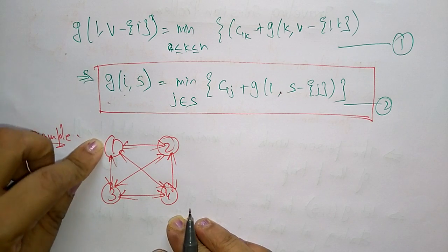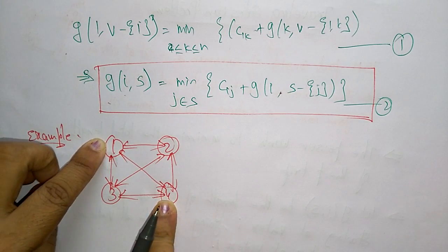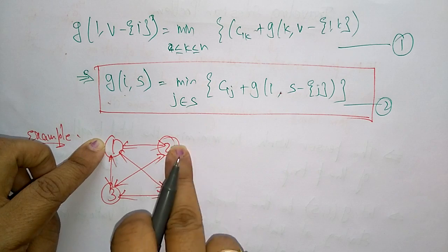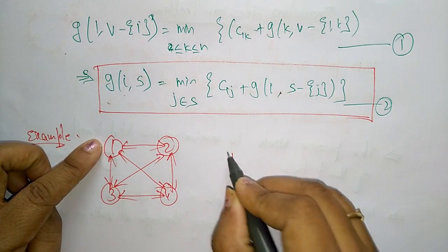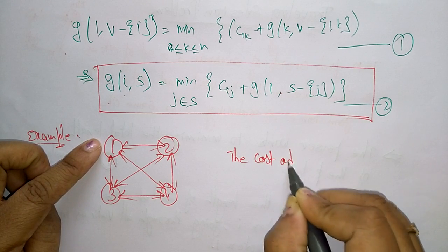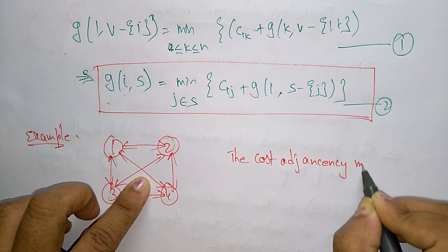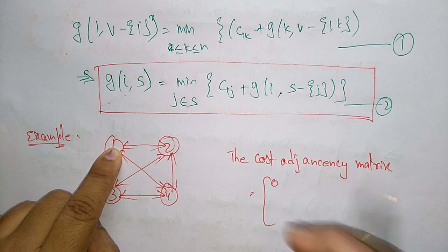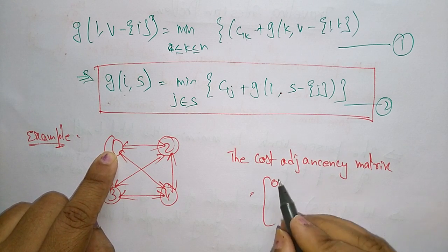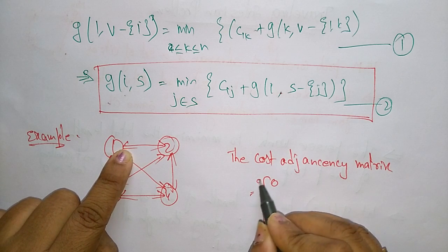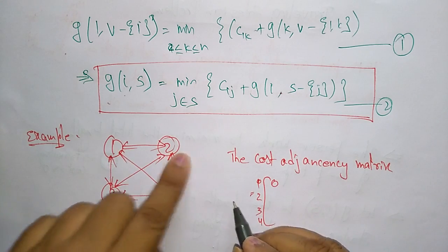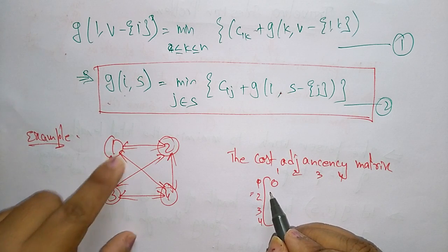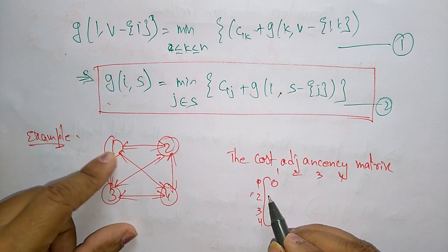We start from vertex one and have to visit all the cities, finding the shortest path the salesman will travel. The cost adjacency matrix for this graph starts from vertex one. From vertex one to vertex one, the cost is zero, because if the person visits the same city — their hometown — the traveling cost is zero.